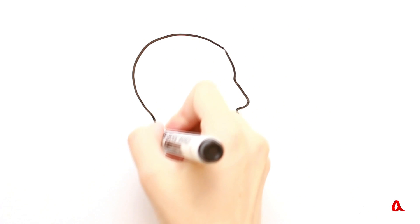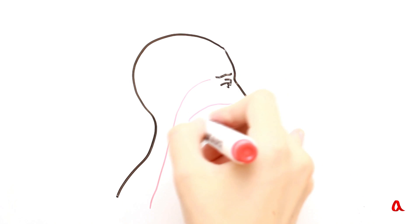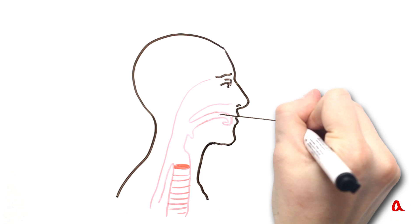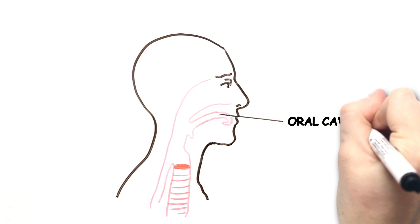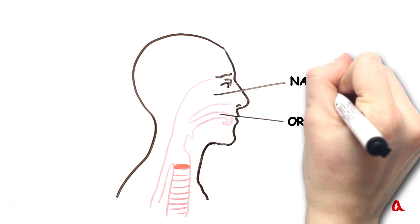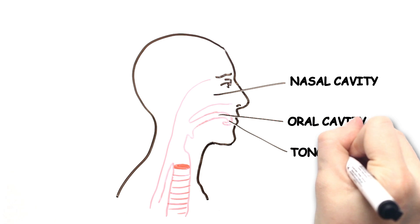Human vocal apparatus is very complicated. This is the reason why we can make a great variety of sounds. Oral and nasal cavity as well as the tongue, teeth and lips take part in producing the sounds.